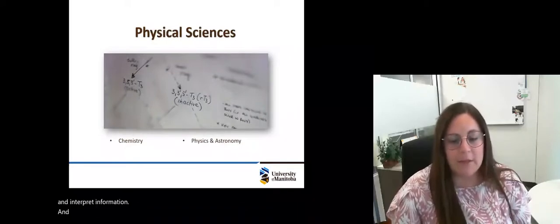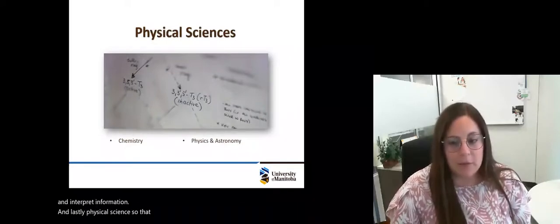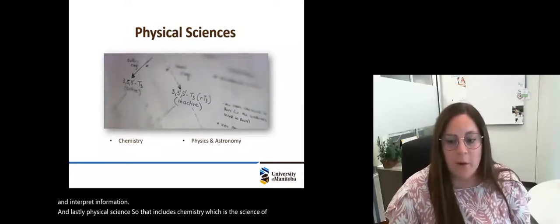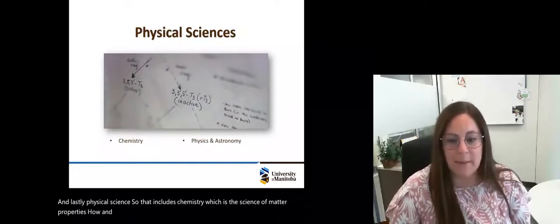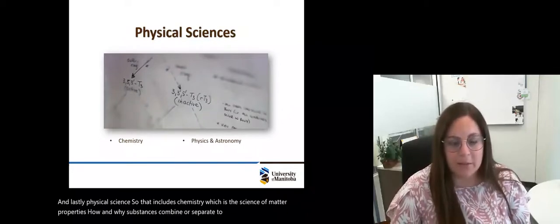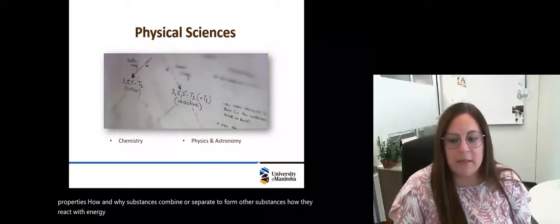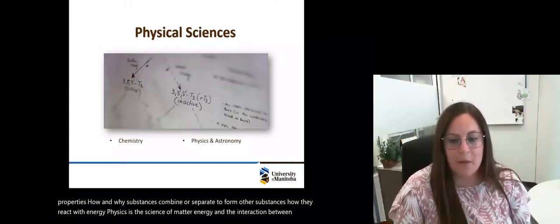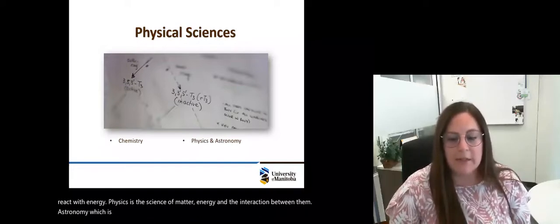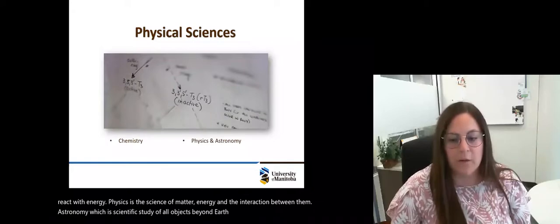And lastly, physical science, which includes chemistry—the science of matter, properties, how and why substances combine or separate to form other substances, how they react with energy. Physics is the science of matter, energy, and the interaction between them. Astronomy is a scientific study of all objects beyond Earth within the universe.